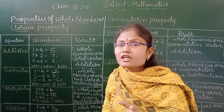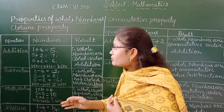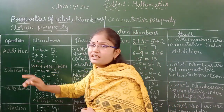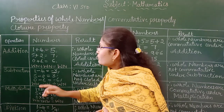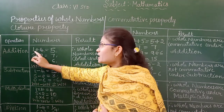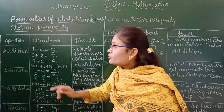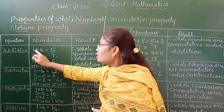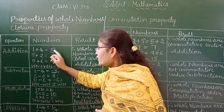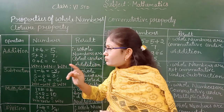If you perform a fundamental operation between any two whole numbers, what happens? If you take addition, for example, I have taken 1 and 4. If you add any two whole numbers, the result you are going to get is 5.